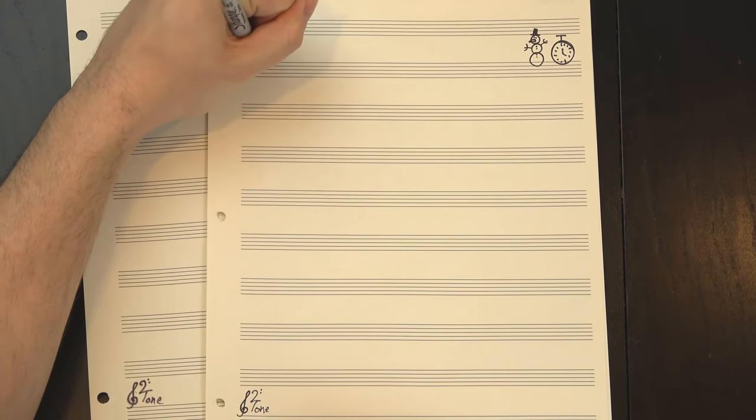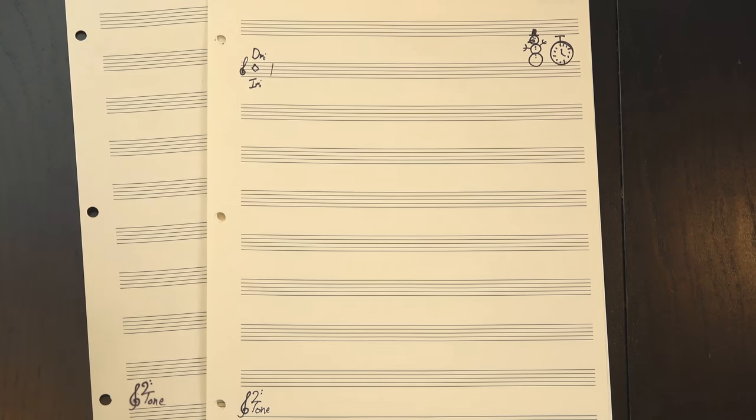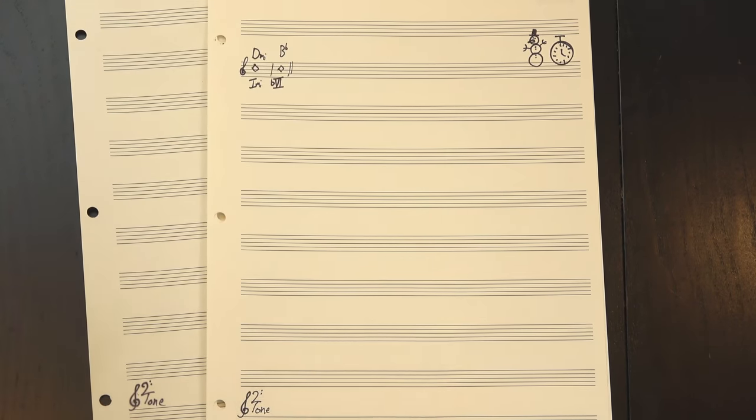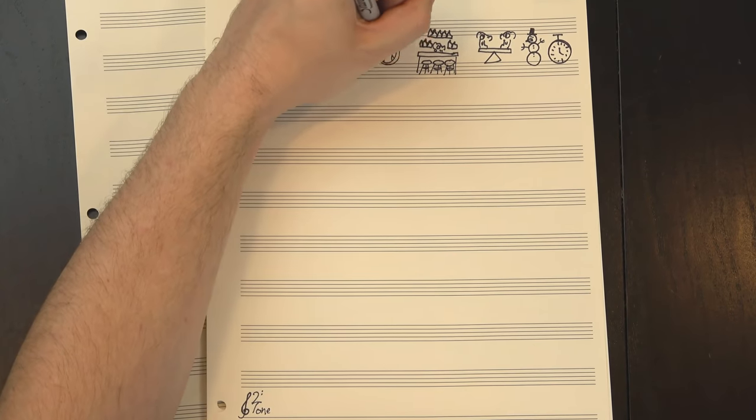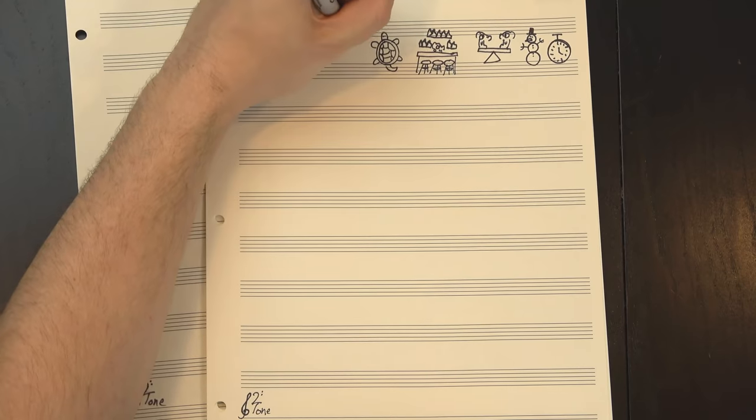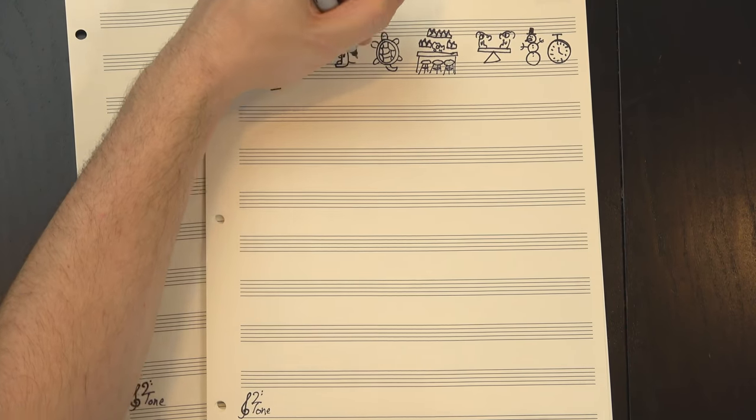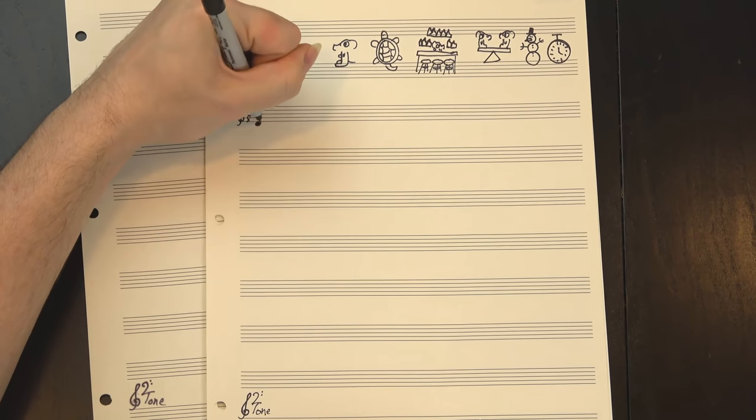This section is basically a shuttle between D minor, the I chord, and Bb major, the b6. These are the two most stable chords in the key, and we spent a full two bars on each of them, so there's really not a lot of harmonic motion here. The chords are staying out of the way so the melody can do its job. That all changes in the prechorus, though.